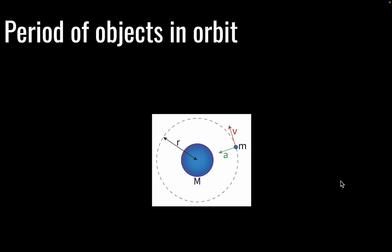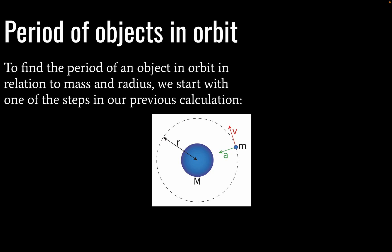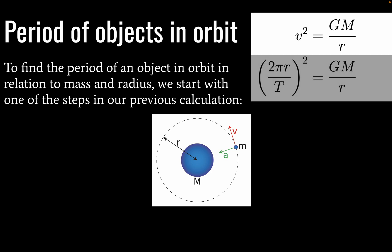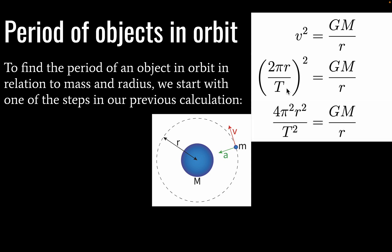Alright, so next up, the period of an object in orbit is going to look like this. We need to start with a previous step, and it's this one. We have velocity squared being equal to the gravitational constant times the mass of our large object about which we are orbiting, divided by our orbital distance. We're going to substitute velocity for something we saw in our previous lecture. Velocity equals 2 pi r divided by t. This is the circumference of a circle divided by the amount of time required to traverse one circular path.